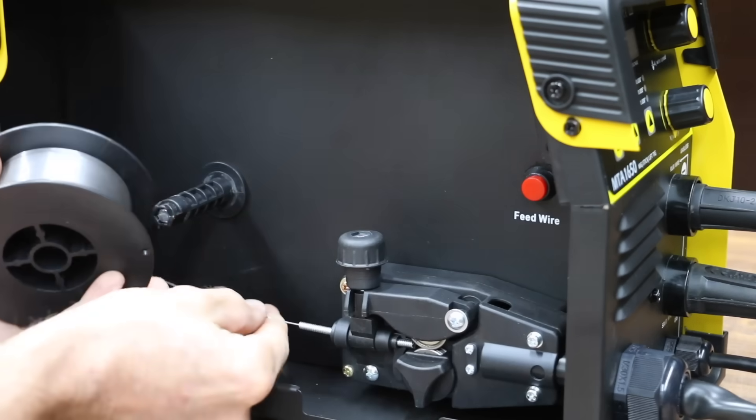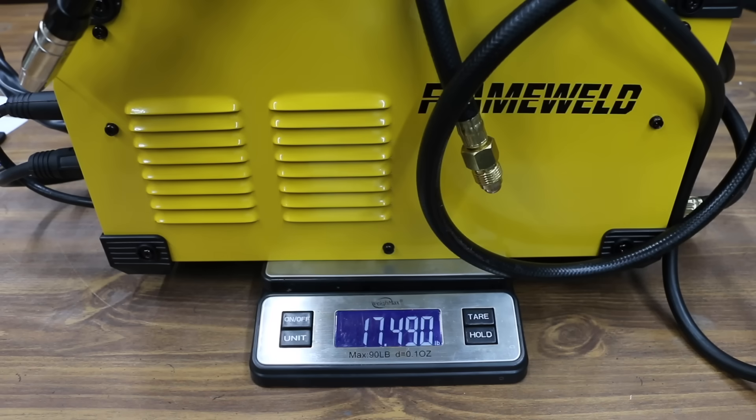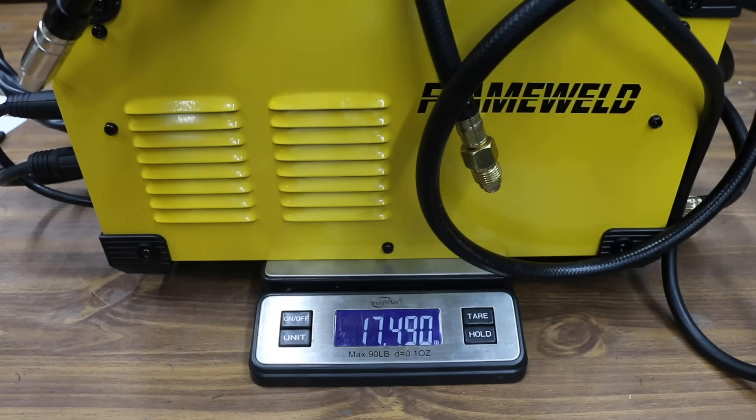To install the roller wire, I'll first remove the spool knob. I'll place a two-pound spool of wire on the holder and reinstall the spool knob. With two pounds of wire inside the welder, 17.5 pounds.